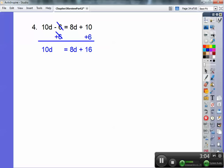Now the trick is if there's any variables on the right-hand side, we get rid of them. So I'm going to subtract 8d from both sides and put it on the left-hand side. Remember, whatever you do to one side, you do to the other side. So you get 2d equals 16, and then you can divide by 2 and you get d equals 8.